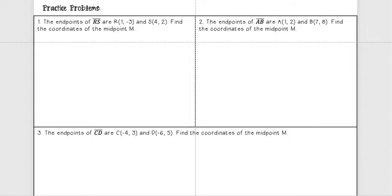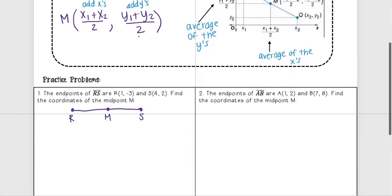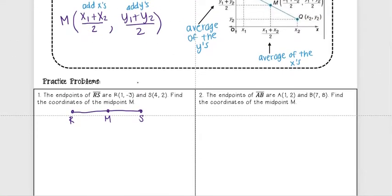Okay, so now let's practice actually finding some endpoints or midpoints. Here it says the endpoints of RS are R(1, -3) and S(4, 2). Find the coordinates of the midpoint M. So I'm given RS here, I'm going to find my midpoint M. You could go ahead and put this on a graph and maybe find it, but that doesn't always work, so I'm going to use my midpoint formula.